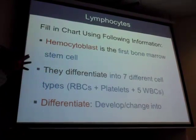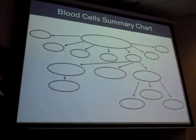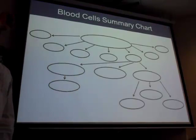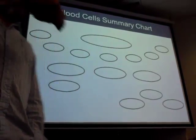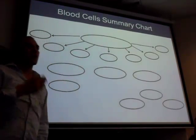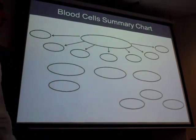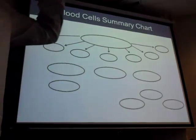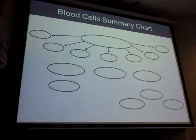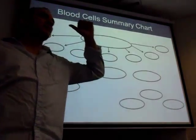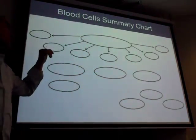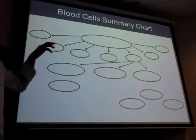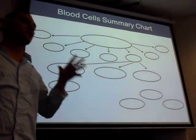Let's go through this. Everything starts as a hemocytoblast going into seven cell types. The seven are: neutrophils, eosinophils, basophils, monocytes, lymphocytes, red blood cells, and platelets. Which one of those seven becomes three other types? Lymphocytes — because we're now focusing on lymphocytes.